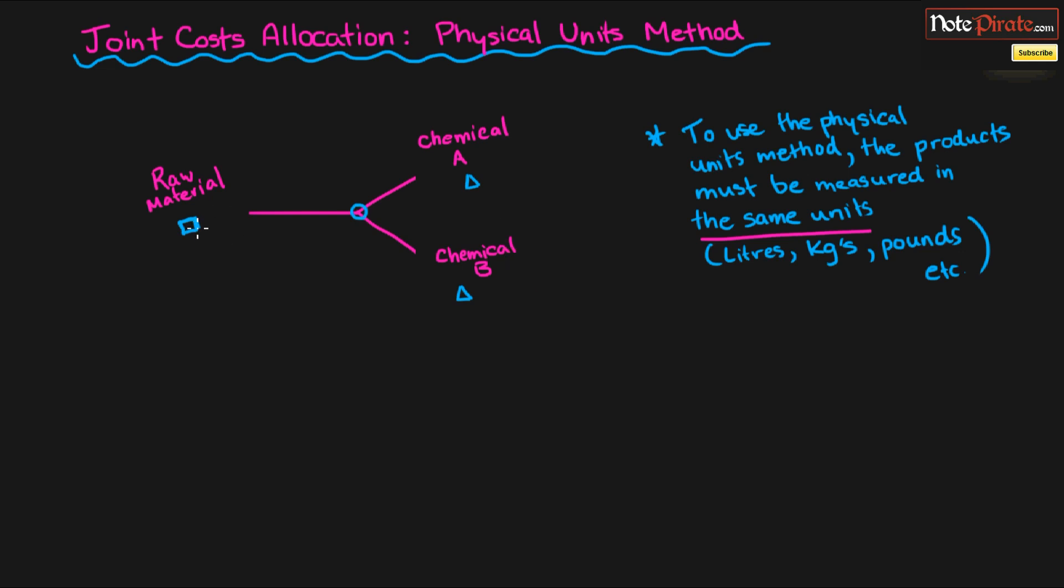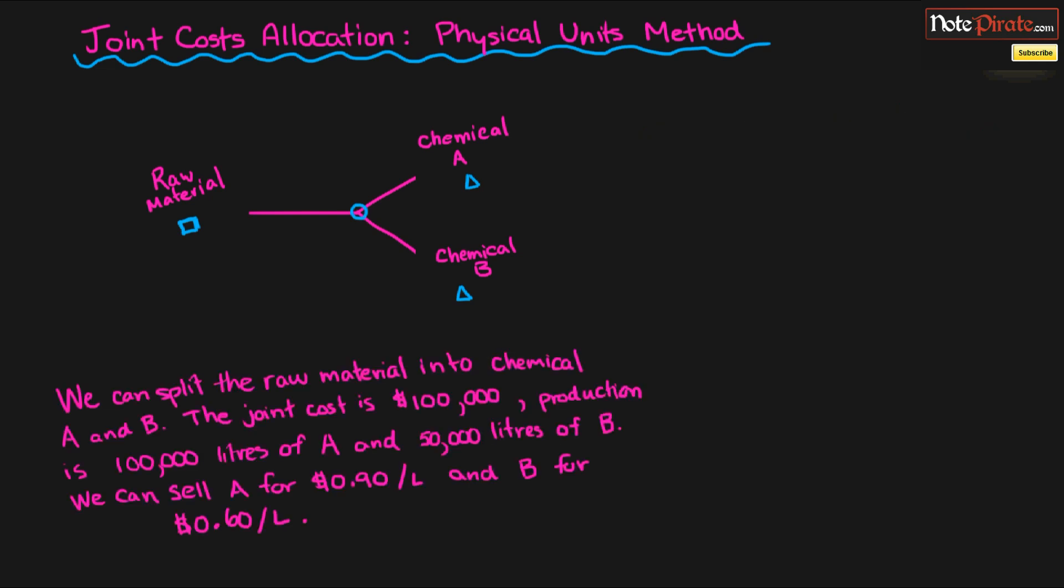If we had maybe a raw material like an animal being processed into hamburgers and steaks, they have to be in kilograms each, or they have to be in pounds each. You've got to make sure that they are in the same units to use this method. So let's go and use this method. Since they are both in liters, we can use the physical units method. We can split the raw material into chemical A and B, which we've seen the joint cost is $100,000.